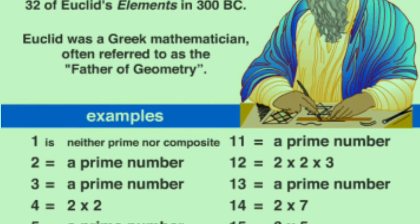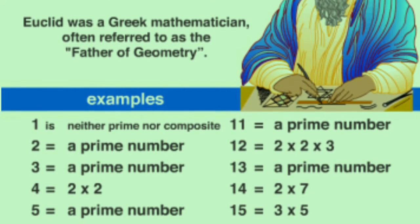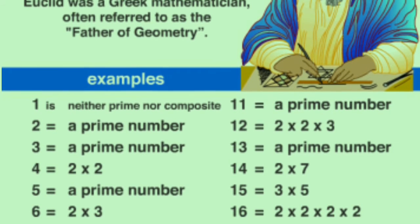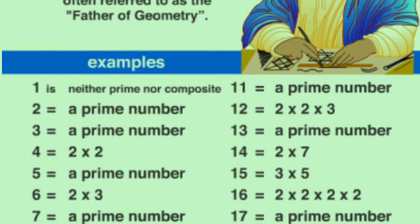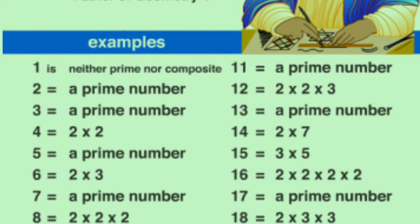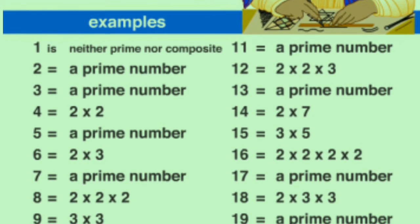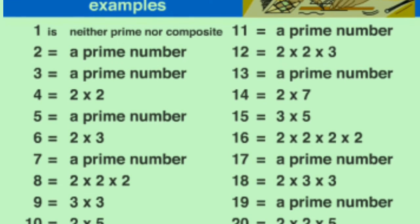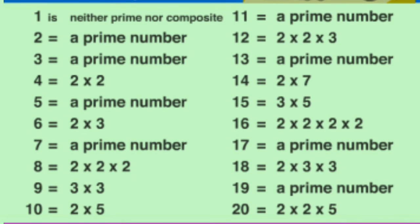Here we have some examples. The number 1 is neither prime nor composite. 2 and 3 are prime numbers, but 4 is a composite number and it can be factorized as 2 × 2, where 2 and 2 are prime numbers. Similarly, 5 is a prime number but 6 can be factorized as a product of prime numbers 2 and 3. Like this, every composite number can be factorized as a product of prime numbers — that is the fundamental theorem of arithmetic.